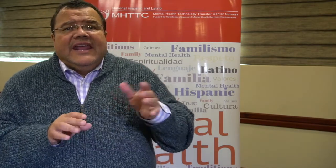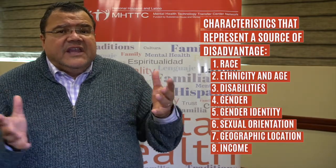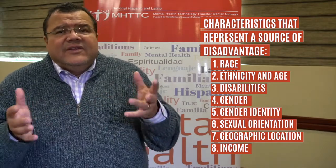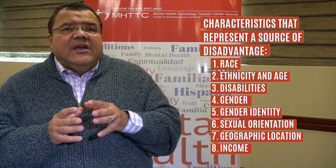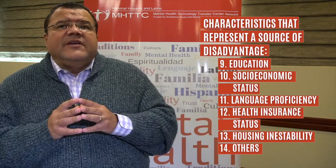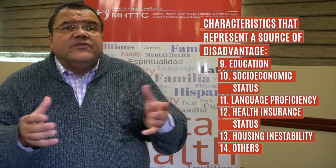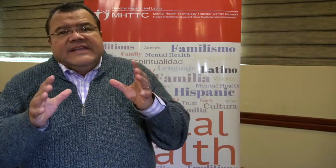Some examples of characteristics that can represent a source of disadvantage in our society and influence health and mental health disparities are race, ethnicity, and age, disabilities, gender, gender identity or sexual orientation, geographic location, income, education or socioeconomic status, language proficiency, health insurance status, housing instability, and others. These factors are often collectively referred to as social determinants of health.